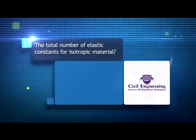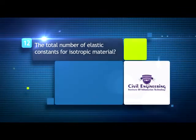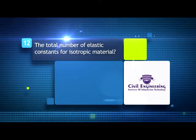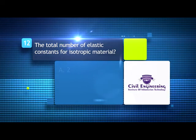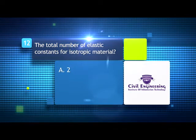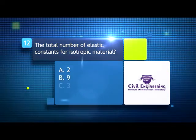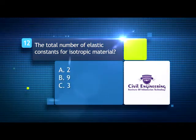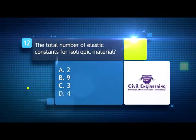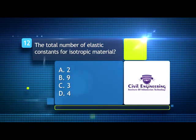The total number of elastic constants for an isotropic material: A) 2, B) 9, C) 3, D) 4.